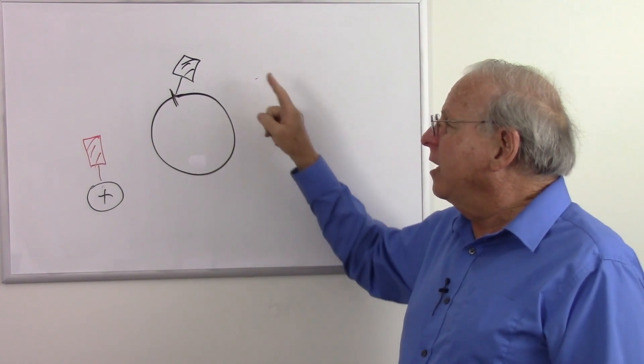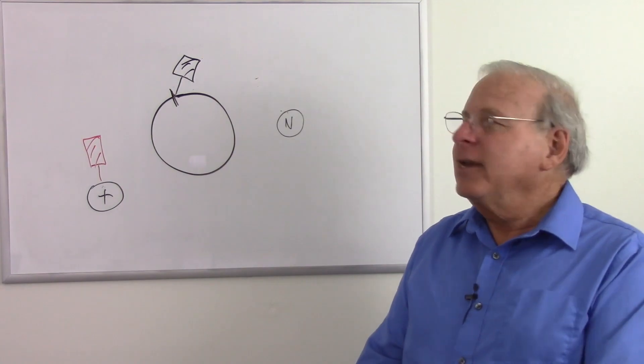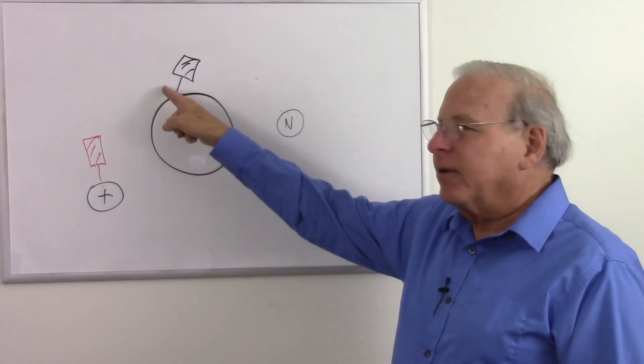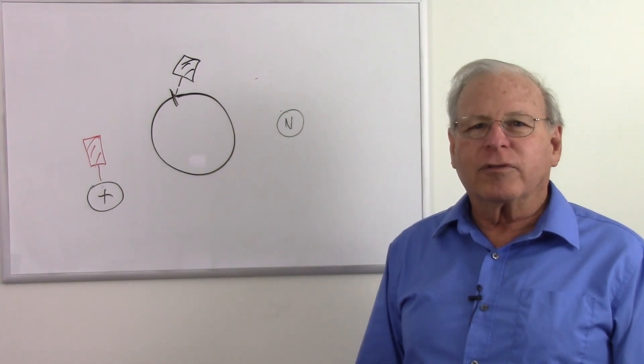But usually, how much voltage is the Earth? It's usually zero volts. Why? Because that's where we drive a piece of metal into it and say that is now zero volts.